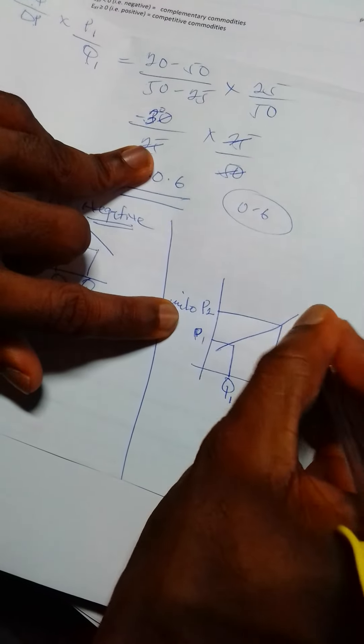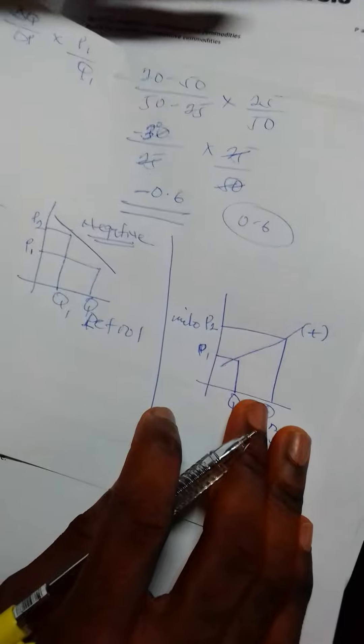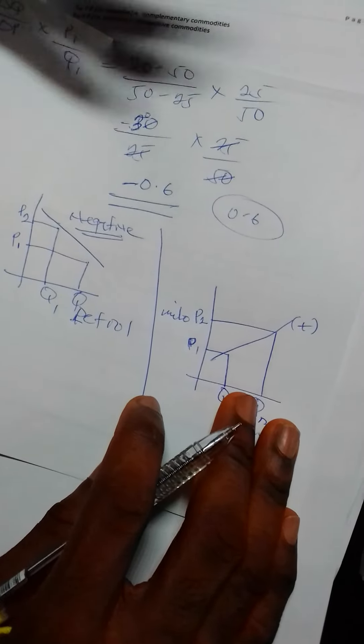So when you connect these two curves together, you have what? A positive slope. All right, so the cross elasticity of demand for complementary commodity is negative.